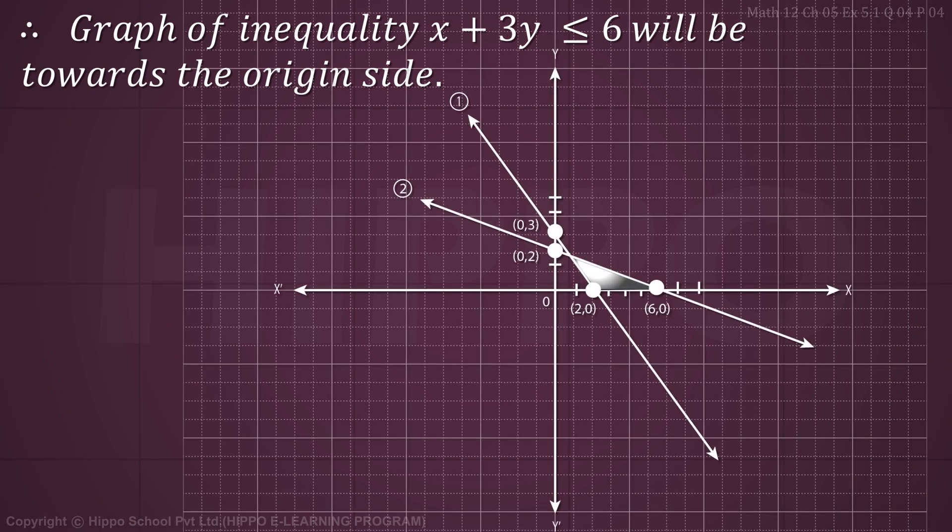Now we draw the graph. Draw the x-axis and y-axis, plot the points, and join them with lines — Line 1 and Line 2. Since Line 1 gave a false result, we shade outside the origin. Since Line 2 gave a true result, we shade inside (towards the origin). The overlapping region is our common region.